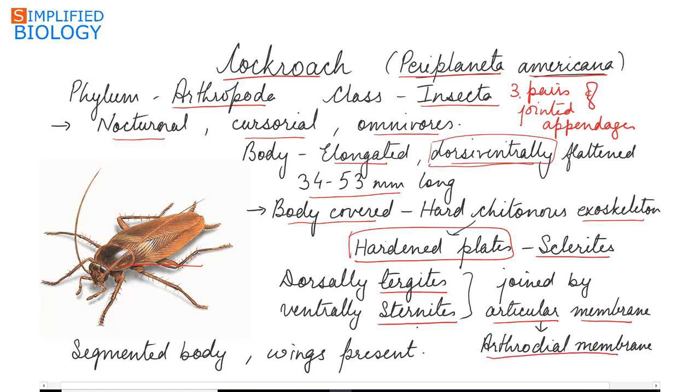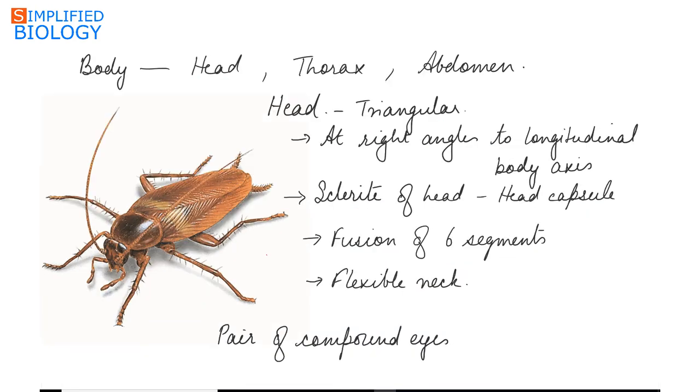They have a segmented body and wings are also present. The body can be divided into three parts: head, thorax, and abdomen.